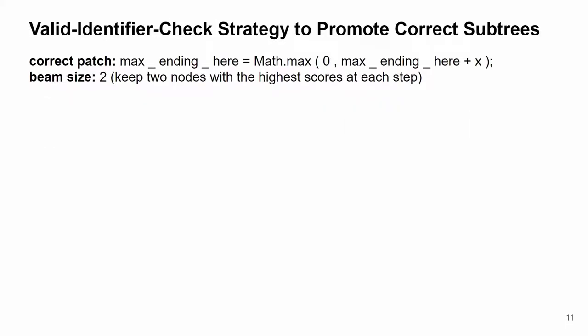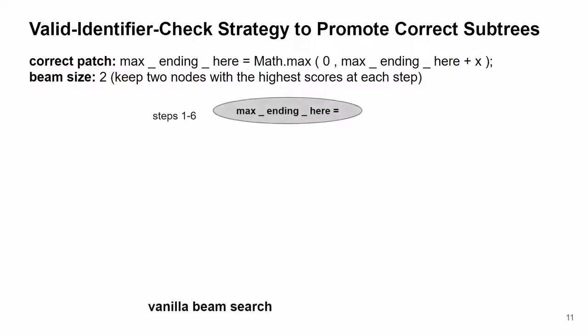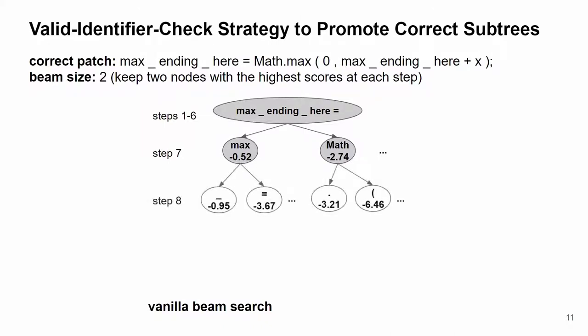I will use an example to help you understand how the valid identifier check strategy helps to generate valid identifiers. Let's consider this tokenized correct patch that we want to generate. To simplify the process, I will use a beam size of 2. Assume that the beam search has selected the correct tokens in the first 6 steps. And in step 7, since the beam size is 2, it selects the two nodes with the highest score to expand. Here the number in the node is the score. And at step 8, for each selected node, the NMT model will calculate the log probability and score for all the tokens, and the beam search will select the best two to expand, which are colored gray.